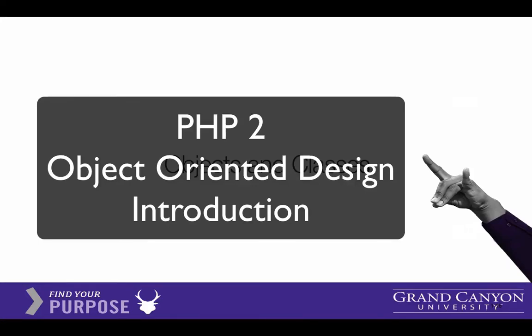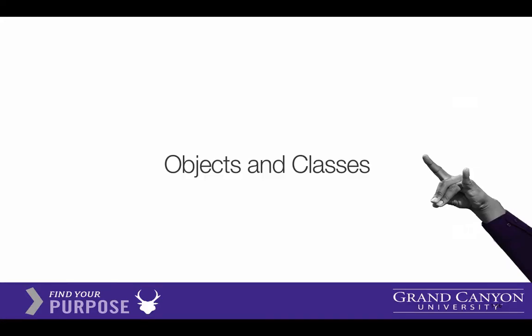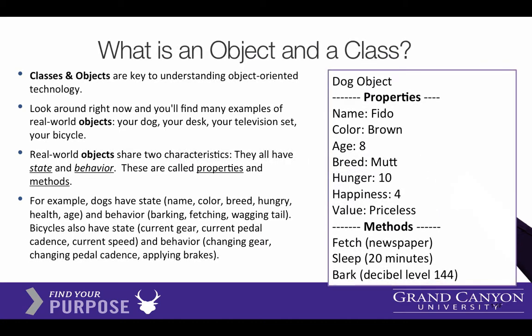Let's talk about objects and classes and how they're developed in PHP. First of all, let's get some vocabulary. The first term is a class, or an object, and they're keys in understanding how to develop an object-oriented program.